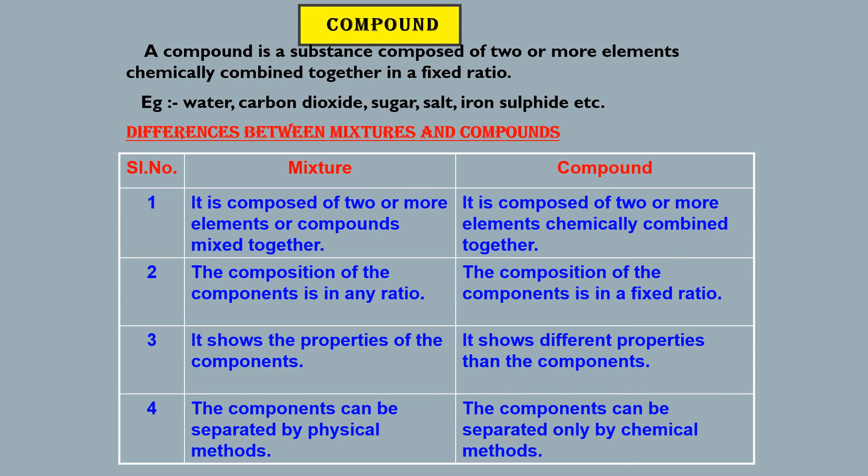Let us now look at the differences between mixtures and compounds. Before that, let us look at what a compound is. A compound is a substance composed of two or more elements chemically combined together in a fixed ratio. Examples include water, carbon dioxide, sugar, salt, iron sulfide, etc.